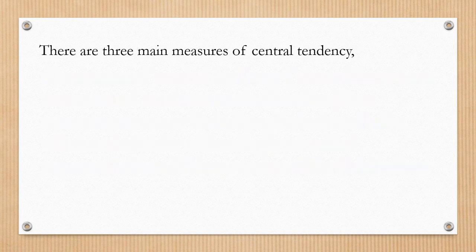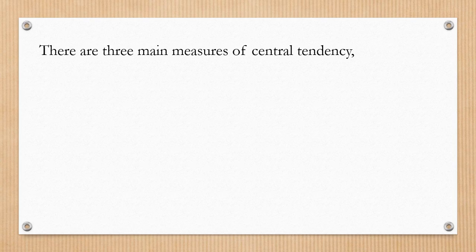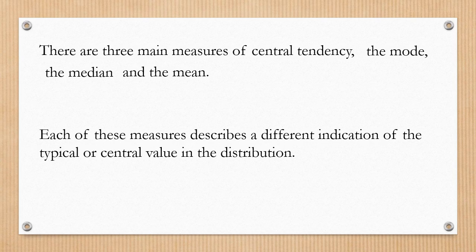There are three main measures of central tendency. These are the mode, the median, and the mean. Each of these measures describes a different indication of the typical or central value in the distribution.